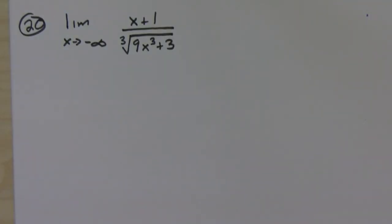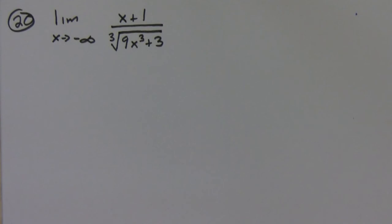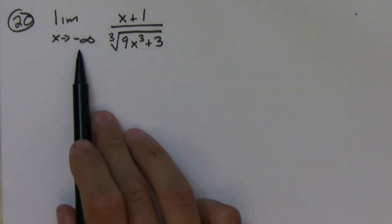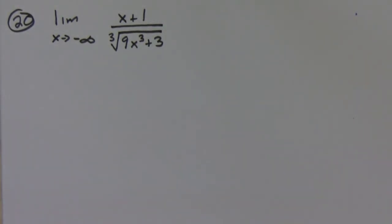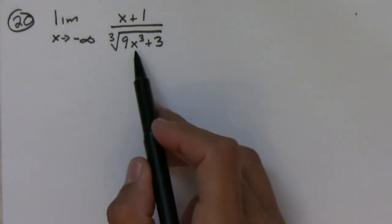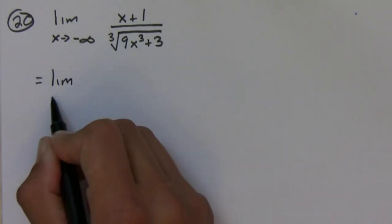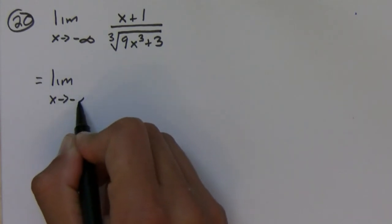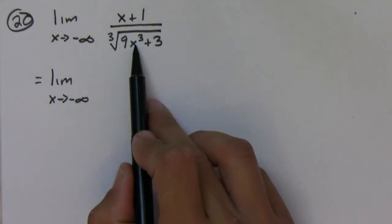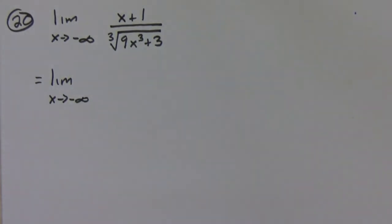Okay, so this is the last problem in our handout and it deals with an infinite limit again. We have the same type of deal: we're going to divide by x to the highest power. The highest power in this case is just x, because x cubed divided by 3 is x.